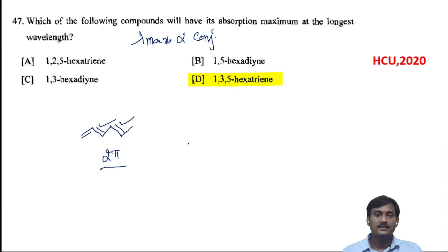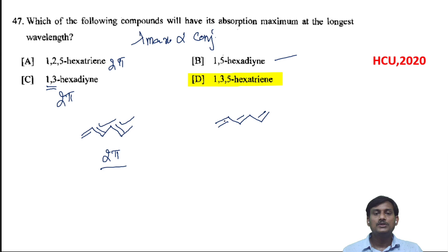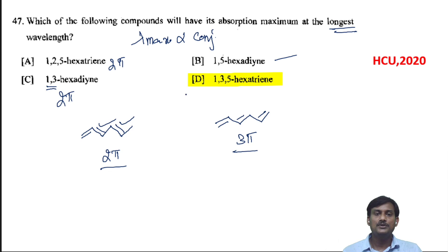In 1,5-hexadiene, there is no conjugation of pi bonds since the positions are at 1 and 5. In 1,3-hexadiene, the 1,3 positions are in conjugation, so two pi bonds are in conjugation. In 1,3,5-hexatriene, all three double bonds are in conjugation — three pi bonds. As conjugation increases, lambda max increases, so the longest wavelength is observed in 1,3,5-hexatriene.